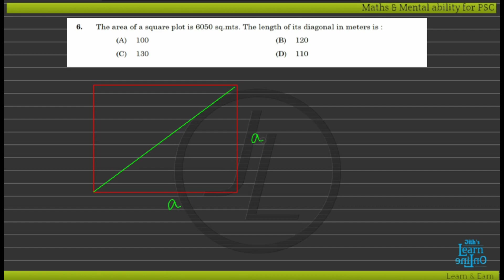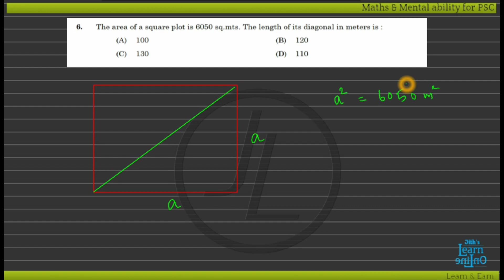We need to find the diagonal of the square. Using the formula: diagonal equals root of A squared plus A squared, which equals root of 2A squared. This is the direct method approach for this variety of question.